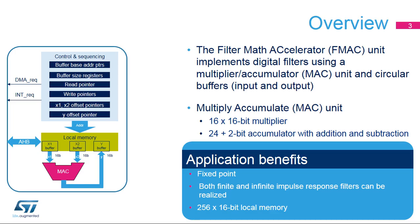The FMAC unit is built around a fixed-point multiplier and accumulator, or MAC. The MAC unit receives two fixed-point 16-bit operands from an internal 256x16-bit RAM and writes the results back to this memory. The address of the input values in local memory is determined using a set of pointers.